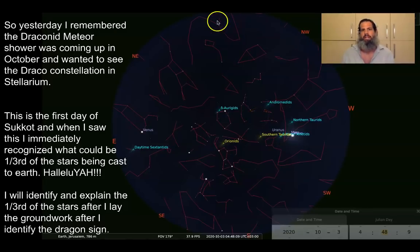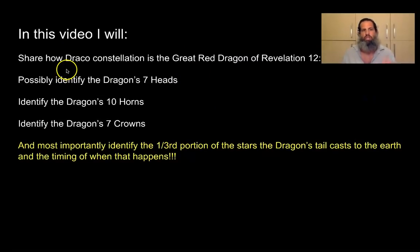Yesterday, I turned on Stellarium and immediately recognized possibly what could be one-third of the stars that are going to be cast to the earth. Before I do that, I'm first going to share how Draco Constellation is the great red dragon of Revelation 12 verses 3 and 4. I'm going to attempt to identify the dragon's seven heads, but I can definitely identify the ten horns and seven crowns, and the third portion of the stars that the dragon's tail casts to earth.